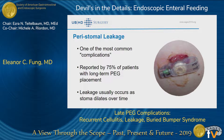In terms of peristomal leakage, it's actually one of the most common complications — and I put that in quotes because some amount of leakage is normal. It's reported by about 75% of patients, but probably underreported as well. A small amount of leakage is normal, so I wouldn't necessarily call it a complication — it's more part of the natural history of PEG tubes. Leakage occurs mostly because the stoma dilates over time as the PEG is kept in longer.